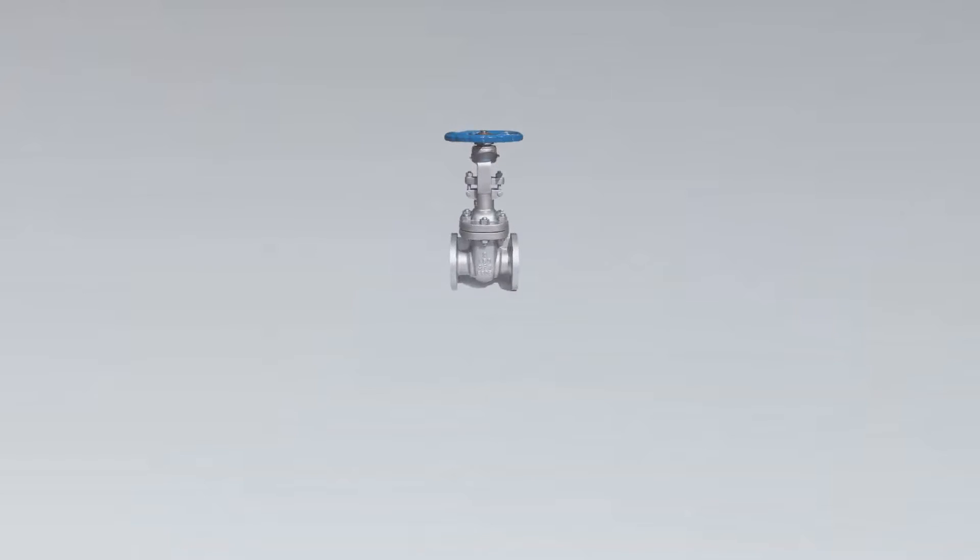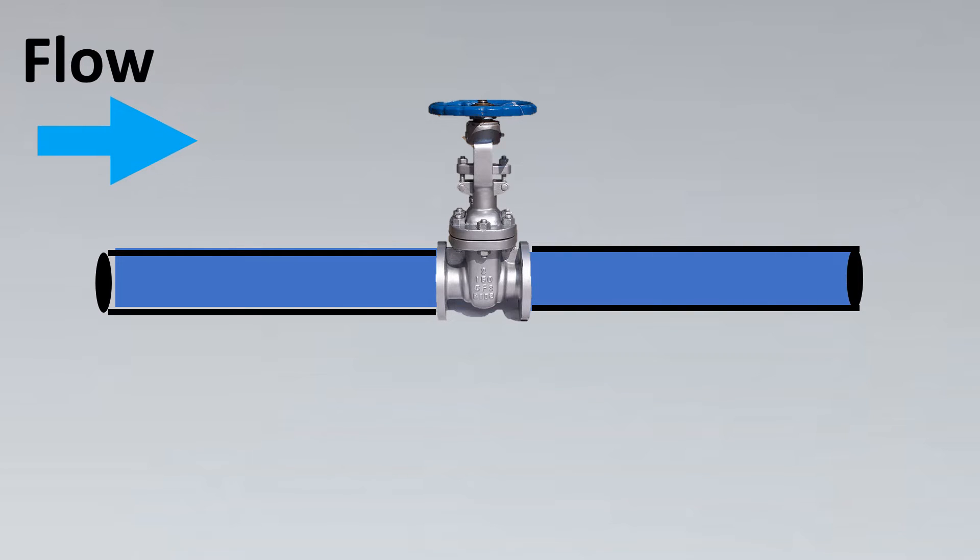Before we get to this amazing concept of cavitation index, we must be very clear with what is cavitation and flashing. Imagine this is your valve put in a line. With the flow, there is some restriction, so you're going to have a dp or differential pressure created. The upstream pressure is P1 and the downstream pressure is P2.